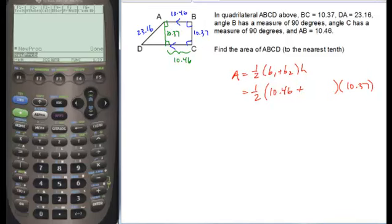We also created this right triangle in here. So in this right triangle we have this leg of 10.37 and this hypotenuse of 23.16.